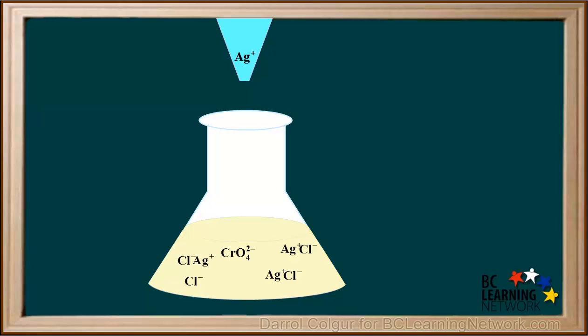Added silver ions will continue to bond with the remaining chloride ions. At a certain point, all of the available chloride ions have bonded with the silver ions. Since there are no chloride ions left, any silver ions that are added will have to bond to the chromate ions.